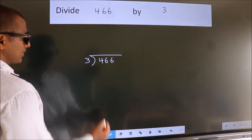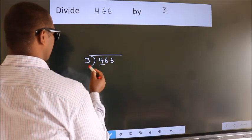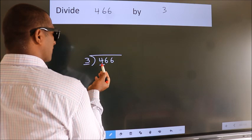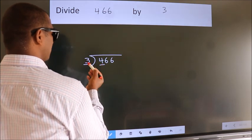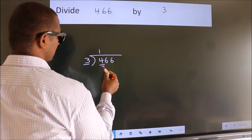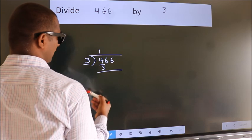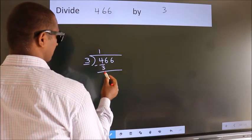Next, here we have 4, here 3. A number close to 4 in 3 table is 3 times 1 equals 3. Now we should subtract. We get 1.